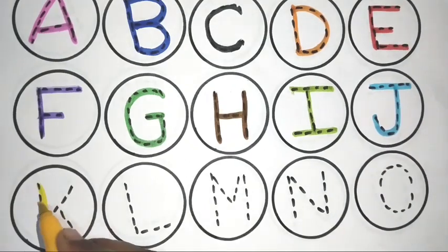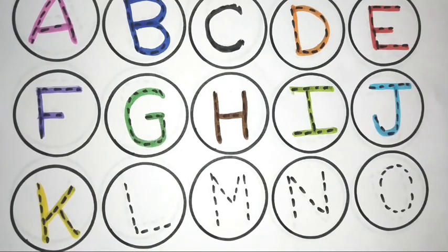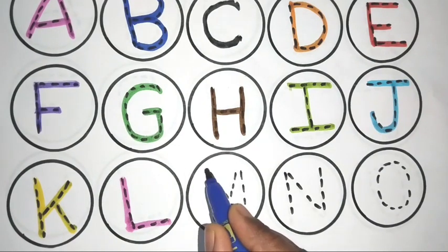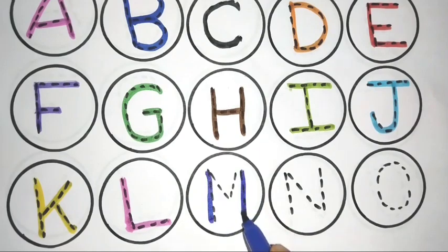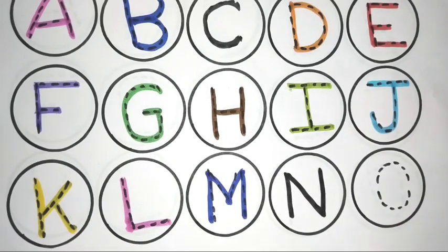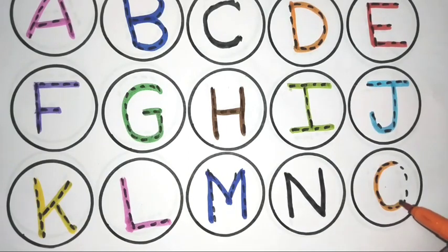J, K, K for Kite, L, L for Lemon, M, M for Mango, N, N for Nose, O, O for Onion.